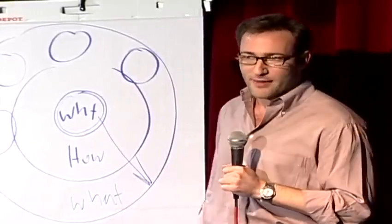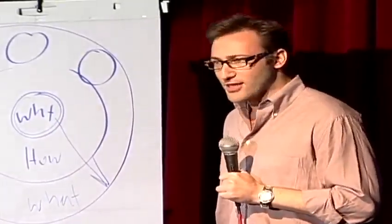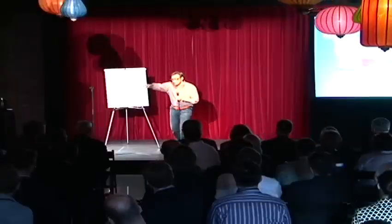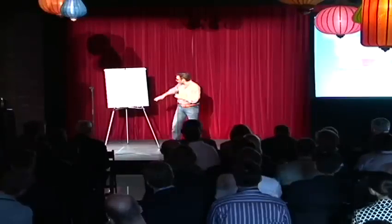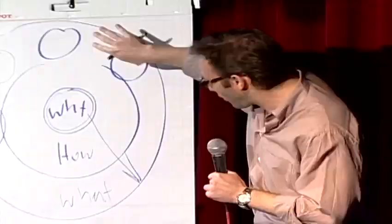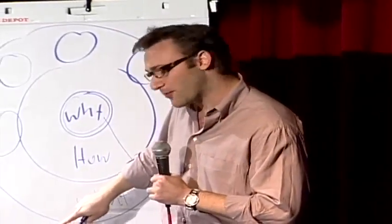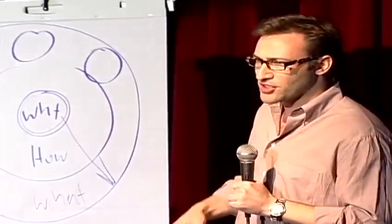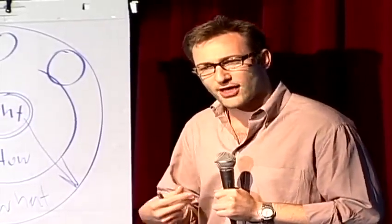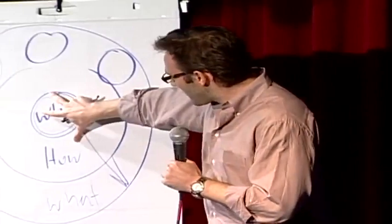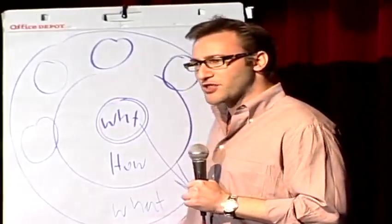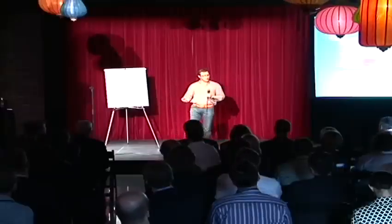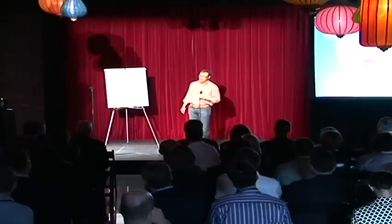Here's the best part. None of what I'm telling you is my opinion. It's all grounded in the tenets of biology, not psychology, biology. If you look at a cross-section of the human brain looking from the top down, what you see is the human brain is actually broken into three major components that correlate perfectly with the golden circle. Our newest brain, our homo sapien brain, our neocortex, corresponds with the what level. The neocortex is responsible for all of our rational and analytical thought and language. The middle two sections make up our limbic brains, and our limbic brains are responsible for all of our feelings, like trust and loyalty. It's also responsible for all human behavior, all decision-making, and it has no capacity for language.